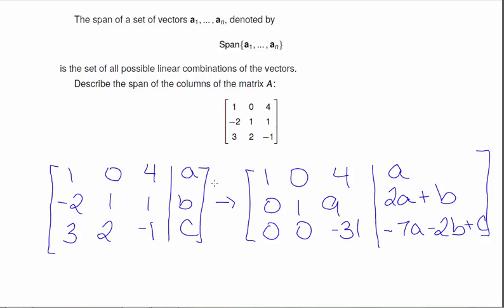So we can see here that there is always a solution. I don't have a row on the left-hand side with all zeros. So it doesn't matter what a, b, and c are. These will always have a solution. So my answer is R3. Anything with 3 entries does have a solution here.